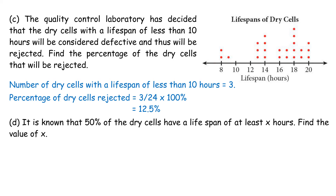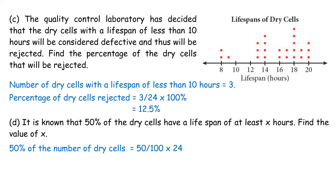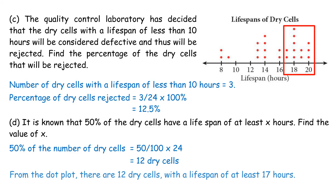D. It is known that 50% of the dry cells have a lifespan of at least x hours. Find the value of x. 50% of 24 = 12 dry cells. From the dot plot, there are 12 dry cells with a lifespan of at least 17 hours. Thus, x = 17.